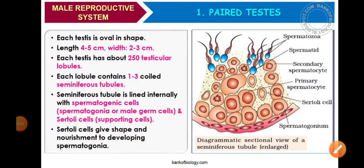Dear students, in this module we'll be continuing with our ongoing chapter, Chapter 3, Human Reproduction. In today's lecture module, we'll basically discuss about the internal structure of testis.